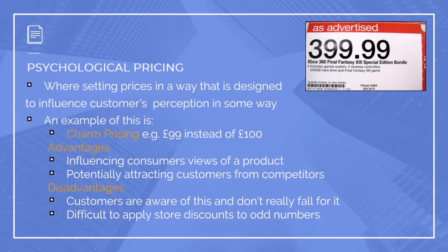Psychological pricing — the best example is shown in the picture: £399.99. It's when you apply some sort of psychological approach to the price, designed to make it look cheaper than it actually is. Psychological pricing is where you set prices in a way that is designed to influence customers' perception. In this example, it's trying to influence the customer to think it's cheaper, showing it as less than £400 when really it's only one pence cheaper.